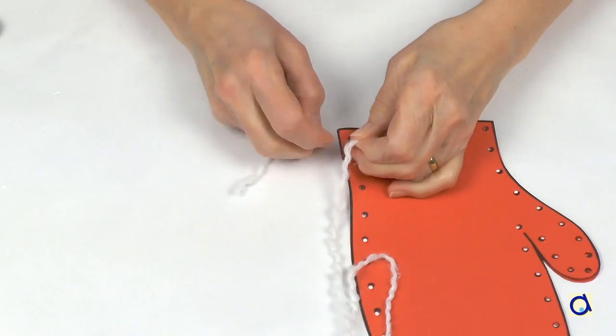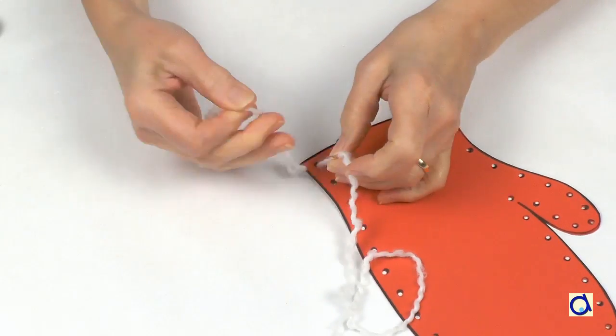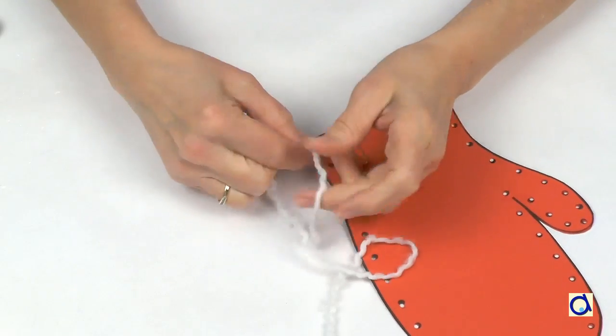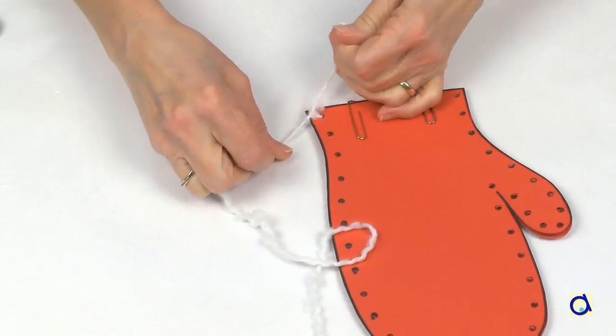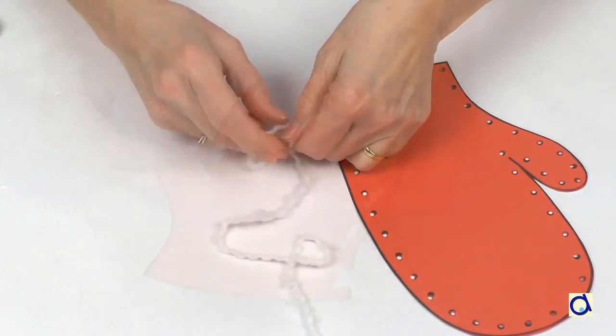Insert the tip of the yarn through the first hole and pull it until only a small piece of the yarn is left on the back of the mitten. Tie a knot with the yarn in the first hole to keep it in place.